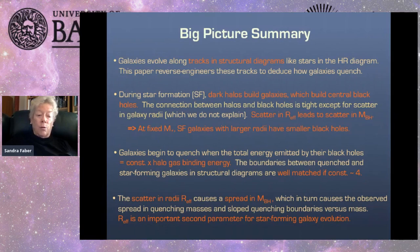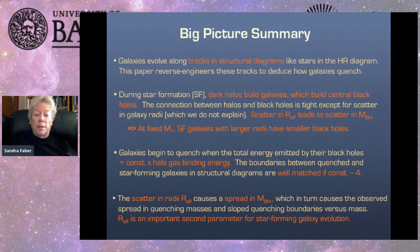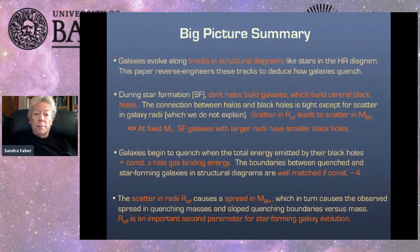The big picture takeaway is that effective radius is an important second parameter for star-forming galaxy evolution, in addition to stellar mass.